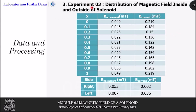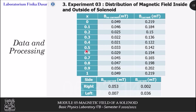For the third experiment, we determine the distribution of magnetic field inside and outside of the solenoid. The upper table shows the distribution of magnetic field inside the solenoid, in which the measurement was done at 11 different points, starting with the leftmost point labeled as 0 meters and the rightmost point labeled as 1 meter. The measurement was done in 2 conditions: with no current and with a current of 1 ampere. We also measure outside the solenoid at the midpoint of 0.5 meters, measuring the magnetic field on the right and left sides, each with no current and with 1 ampere applied.